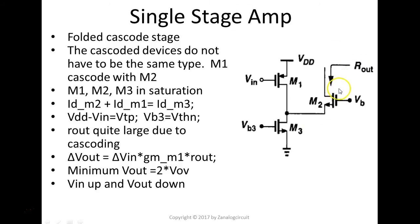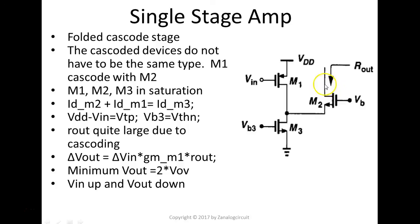Again, because this is a cascode, the output impedance when you look into this node is quite high, while the gm does not change. So overall, the voltage gain from VIN to VOUT is increased a lot. For the minimum VOUT voltage, in order to keep these three devices in the saturation region, the minimum voltage on this node is going to be one overdrive — about 0.2 or 0.3 volts. Here the minimum voltage on the output node is going to be two overdrive voltages. As for signal polarity: when VIN goes up, the drain current of M1 goes up, so VOUT goes down.